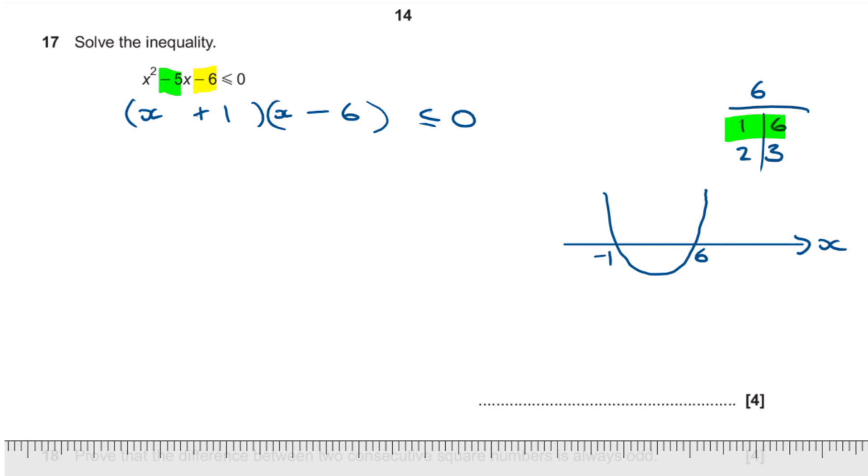Now we want to know when this function is less than 0. So what sections of the number line for x is this graph negative? Well it's below the axis in this section from here to here. On the other sides, here it's above the axis and here it's above the axis. So it's just those bits between minus 1 and 6 where this function is below the x-axis or negative. So the region we're looking for is the region between minus 1 and 6. So x lies between minus 1 and 6.